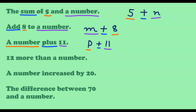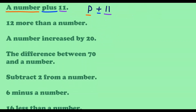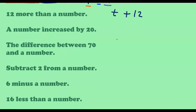Next, we have '12 more than a number.' Since we have 'more,' we use the addition sign. Let us use the variable t. So 12 more than a number is t plus 12. Next, we have 'a number increased by 20.' Since it is increased, we add 20. Let us use the variable s. So a number increased by 20 is s plus 20.